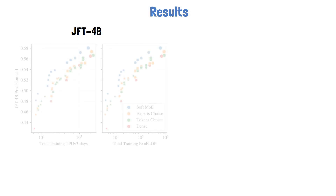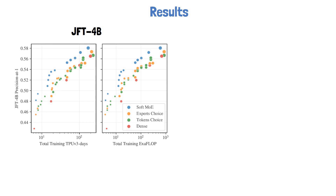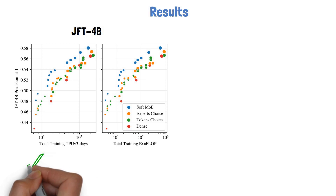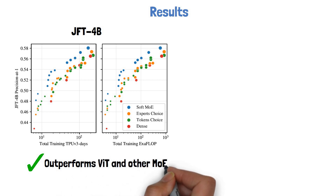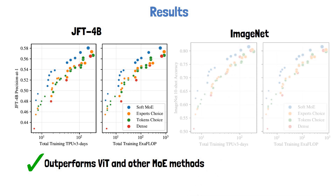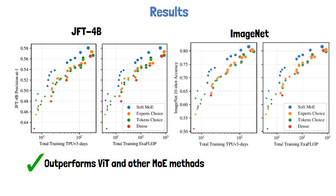To show the great potential of this method, let's see some of the results from the paper. They ran an extensive experiment in visual recognition, and starting with JFT4B, which is an internal Google images dataset, they show in this chart the performance of Soft MOE in blue, and other MOE methods in orange and green, and visual transformer in red. The x-axis on the left chart is TPU days, and on the right chart is exaflops, and it is clear that given the same allocation of resources, Soft MOE outperforms visual transformer and other MOE methods. A similar trend is observed when they measure the results on ImageNet, as we can see on these two charts on the right.